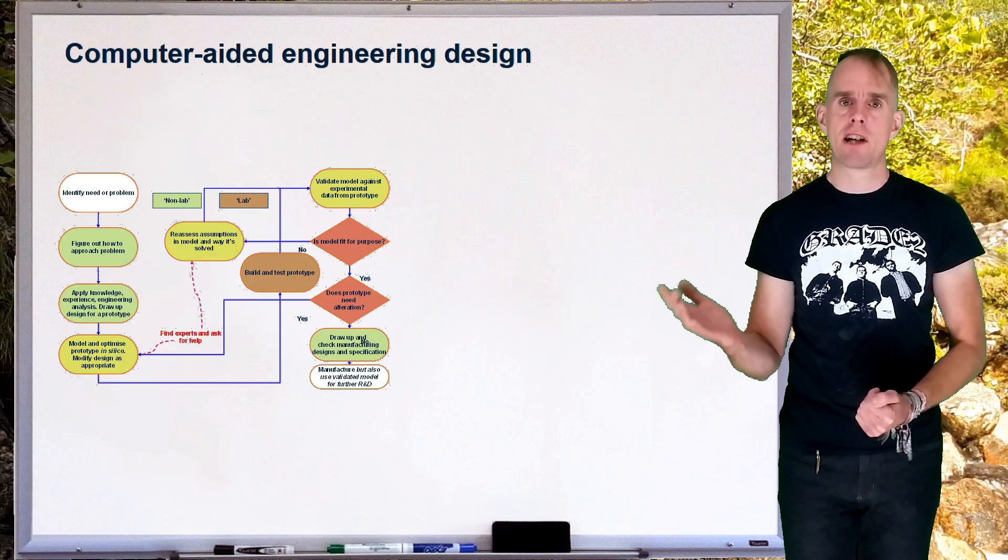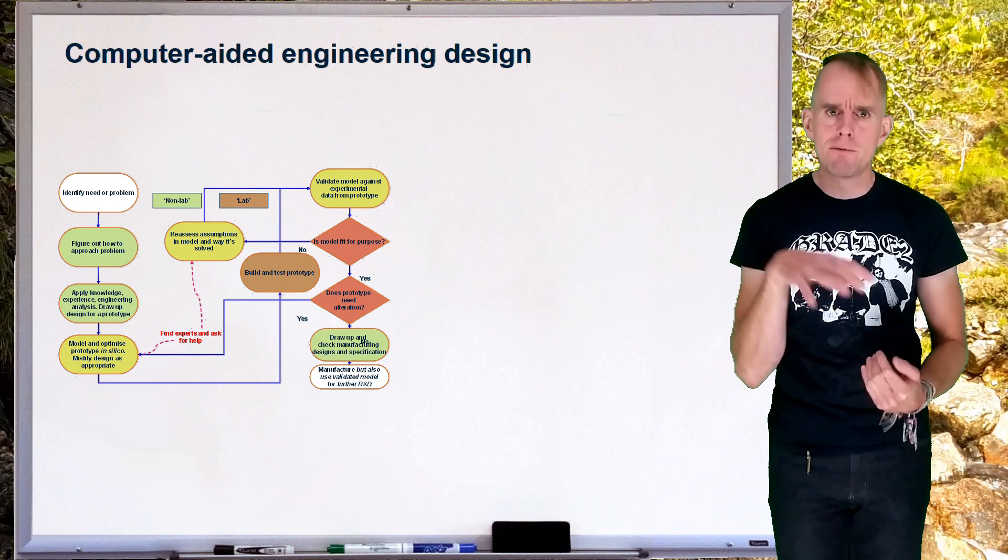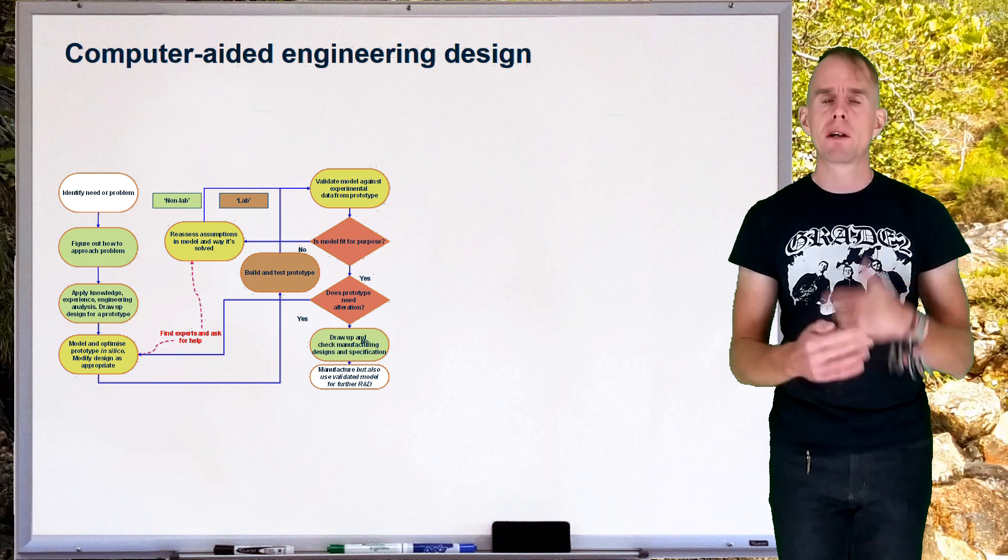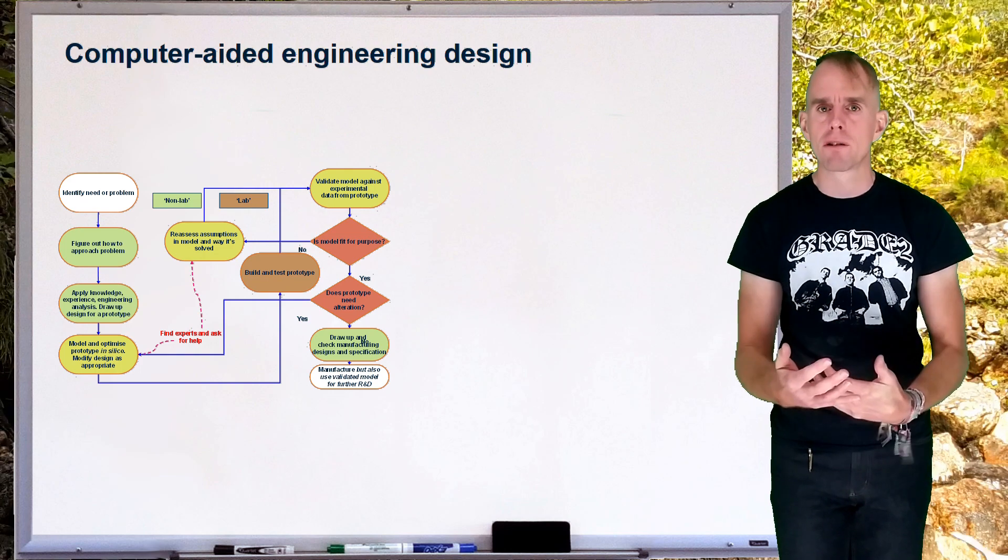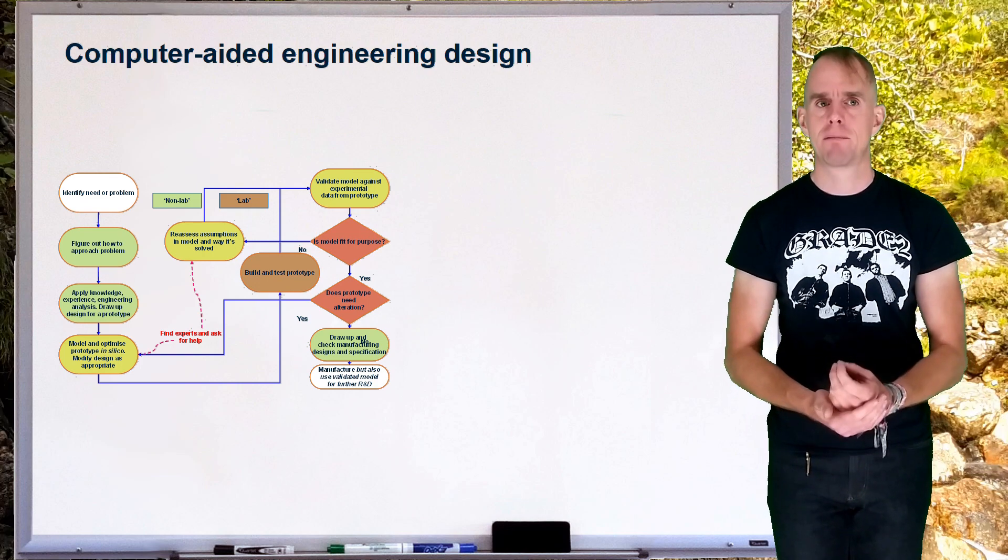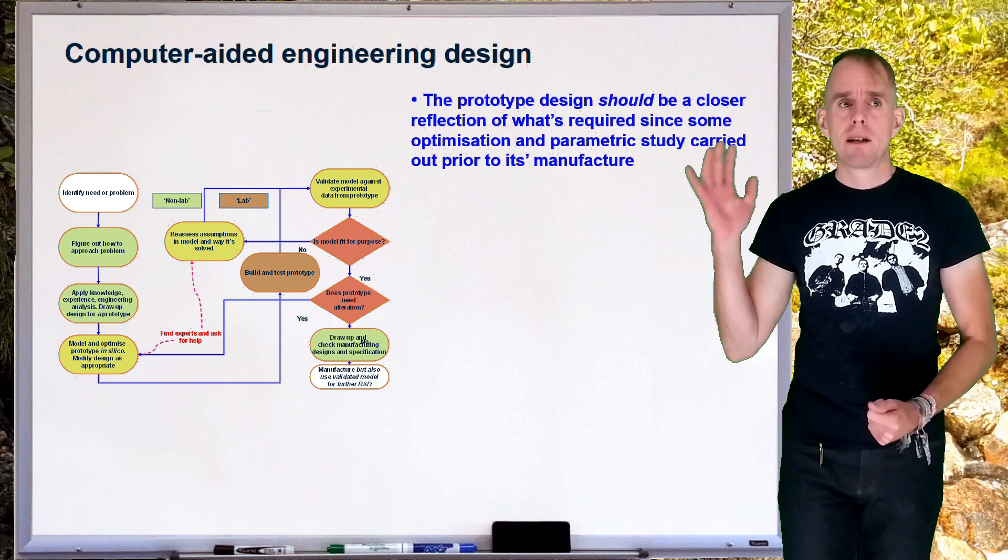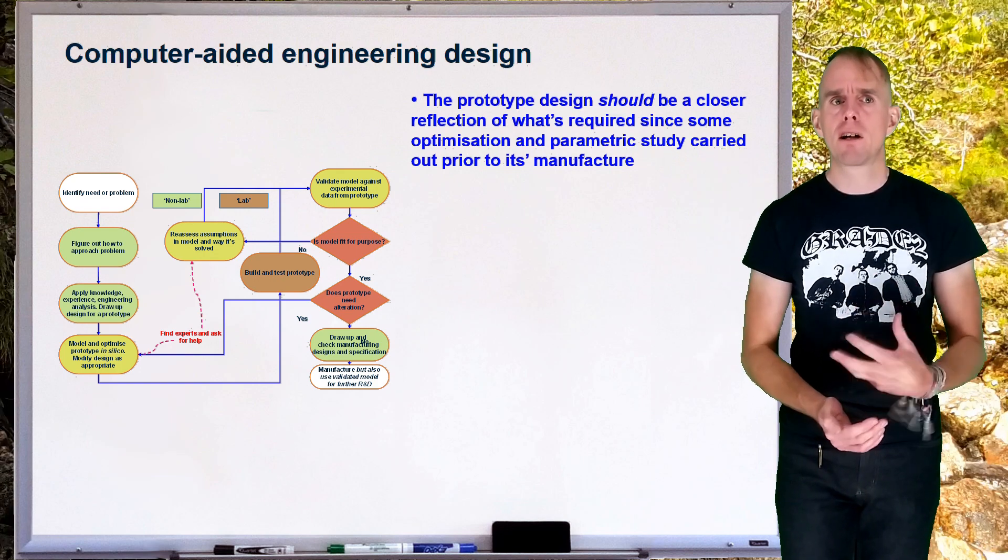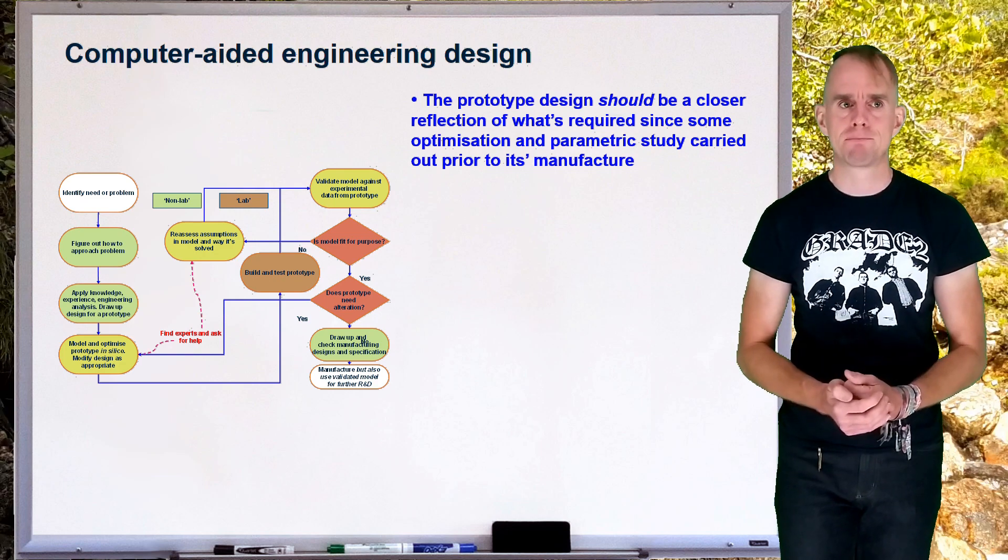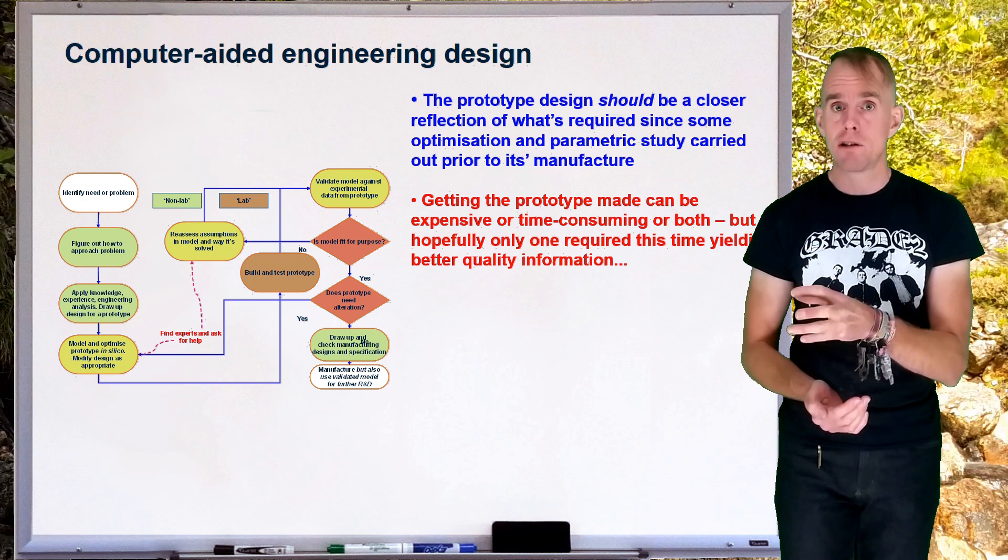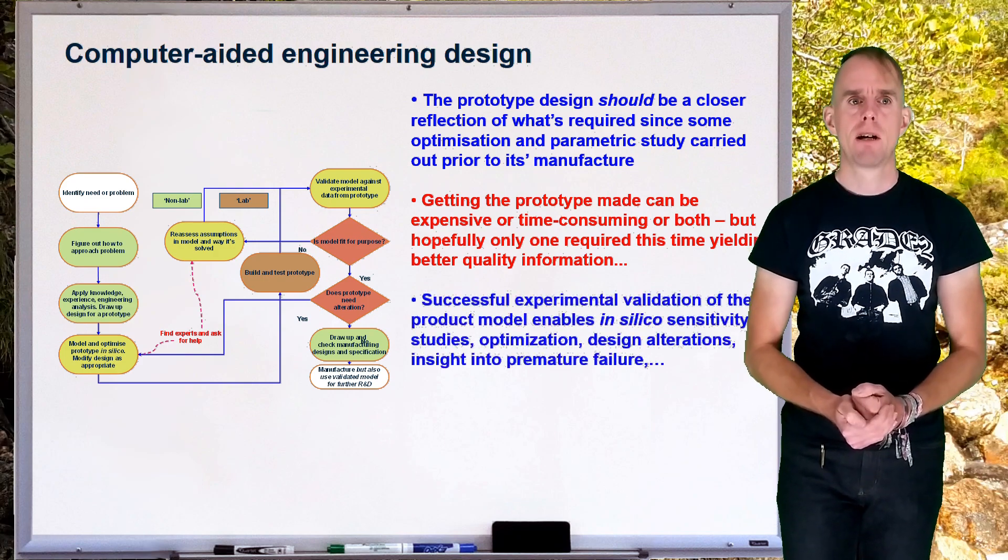So, computer-aided engineering design takes the best of the components from the traditional design process, the skill, the analysis of the engineer, but combines it with a very powerful tool, that of computational techniques, such that we can very quickly draft up a design and test it in the computational world. However, these tests and these models are nonsensical if we haven't validated. Validation, validation, validation is going to be the watchword that you will be muttering throughout this course. So, computer-aided engineering design should produce a prototype that's a closer reflection on what's required, because we can do some optimisation and some parametric studies prior to prototype manufacture. Getting the prototype made can be expensive and time-consuming, but hopefully, now, we only have to make it once, rather than iterate that physical process a number of times.